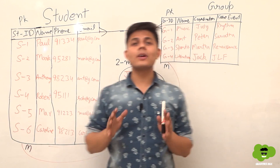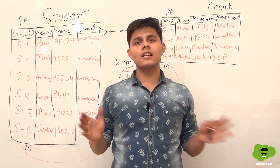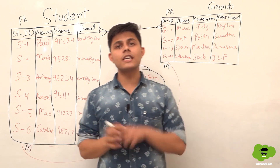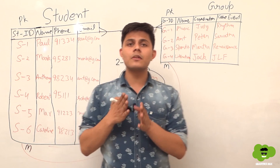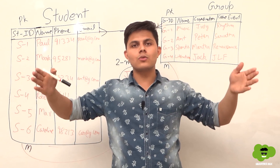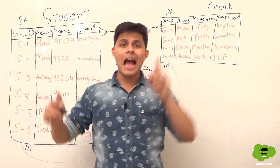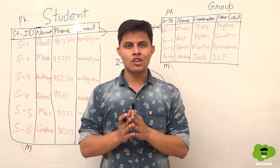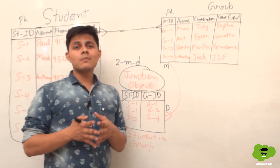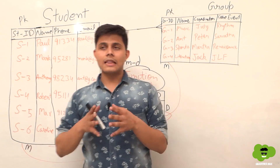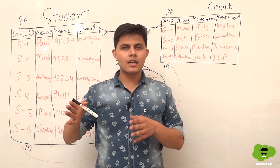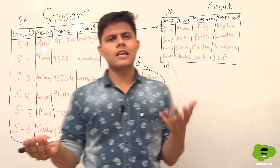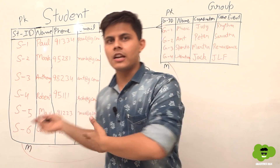Quick recap: to implement a many-to-many relationship between two objects, we first create a third object (the junction object) and create two master detail relationship fields on it, each related to one of the original objects. Now, there are more things to consider: primary relationships and secondary relationships.